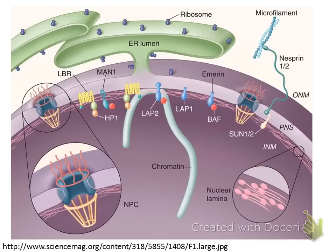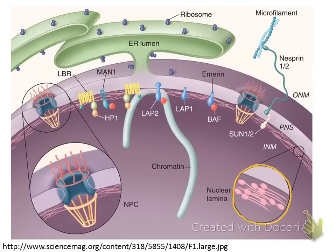Everything inside the nuclear envelope floats in the nucleoplasm, which is just a fancy name for the liquid contents inside the nucleus. A special mesh of protein fibers called the nuclear lamina holds the chromatin to the nuclear envelope. This is a way of organizing the DNA, because when it is not densely packed into a chromosome, the DNA is a very loose, stringy chemical that needs to be somewhat organized in order to be used by the rest of the cell and direct cellular activities.